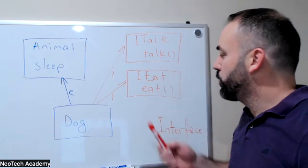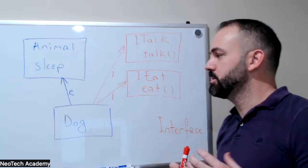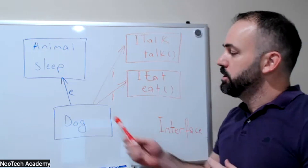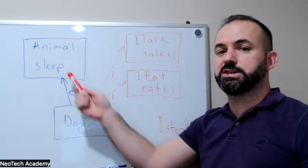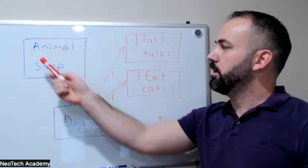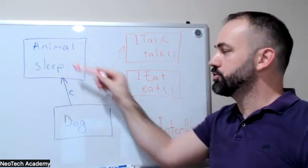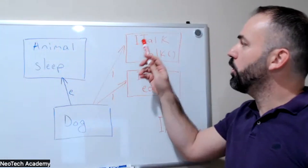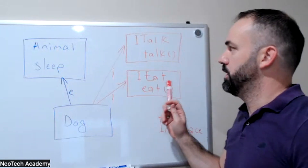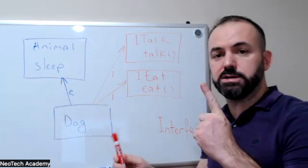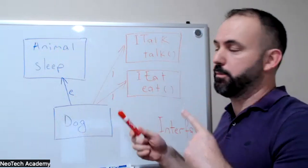Let us explain another important concept, which is interfaces. Interfaces are very similar to classes, but there are some differences. We have an animal class and a dog class which is extending the animal class. The animal class has a sleep method, and the dog, since it's extending the animal class, also has the sleep method. The dog class is also implementing the ITalk interface and the IEat interface. One class can extend one and only one class, but one class can implement multiple interfaces.